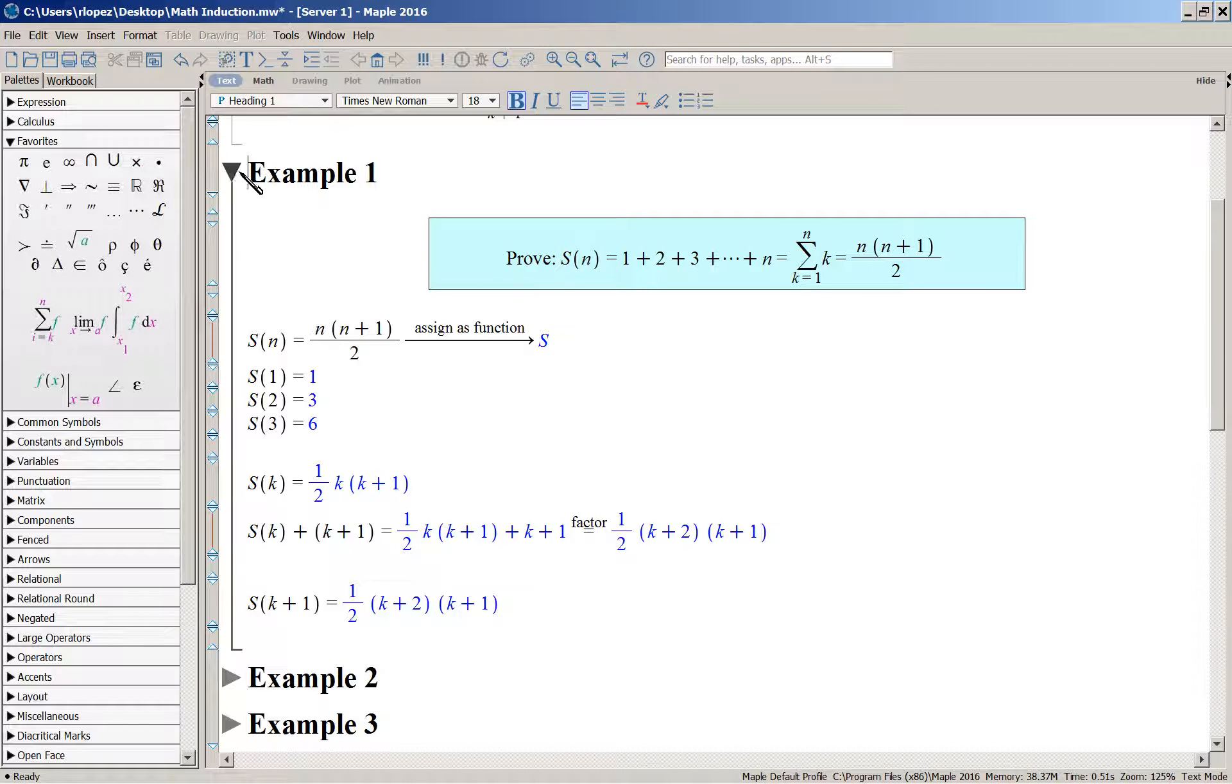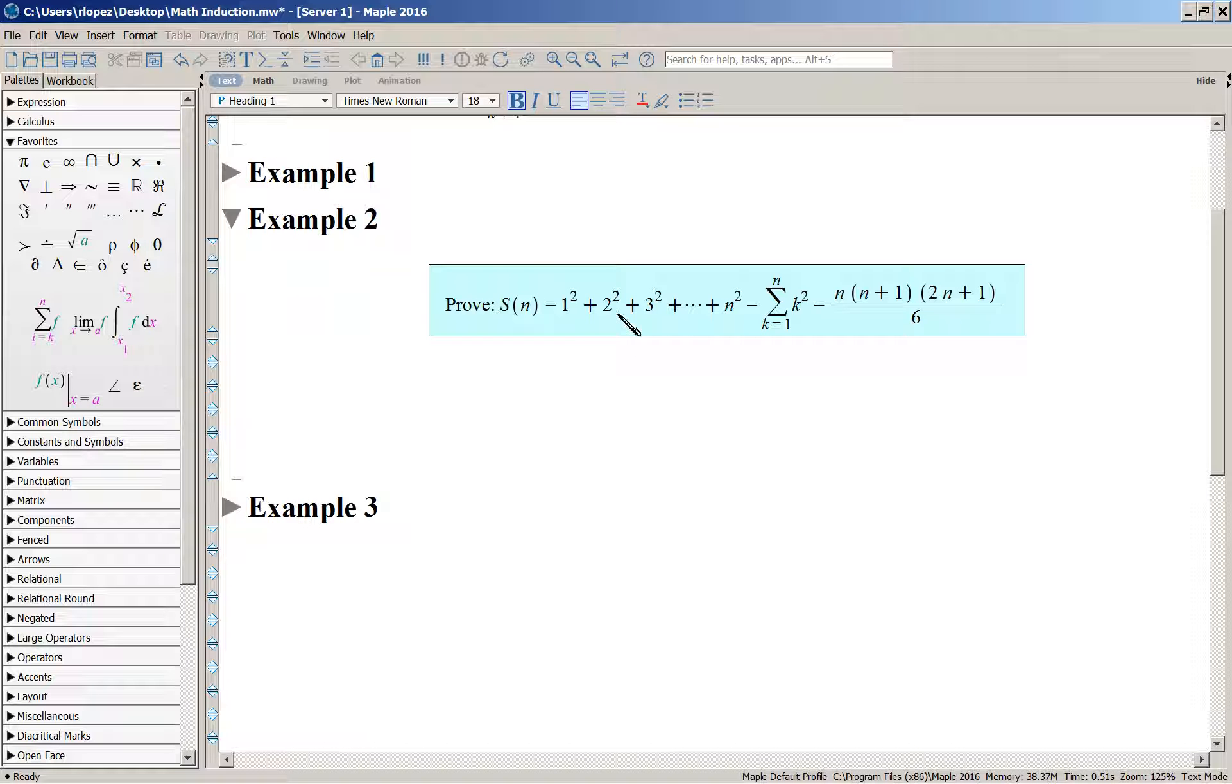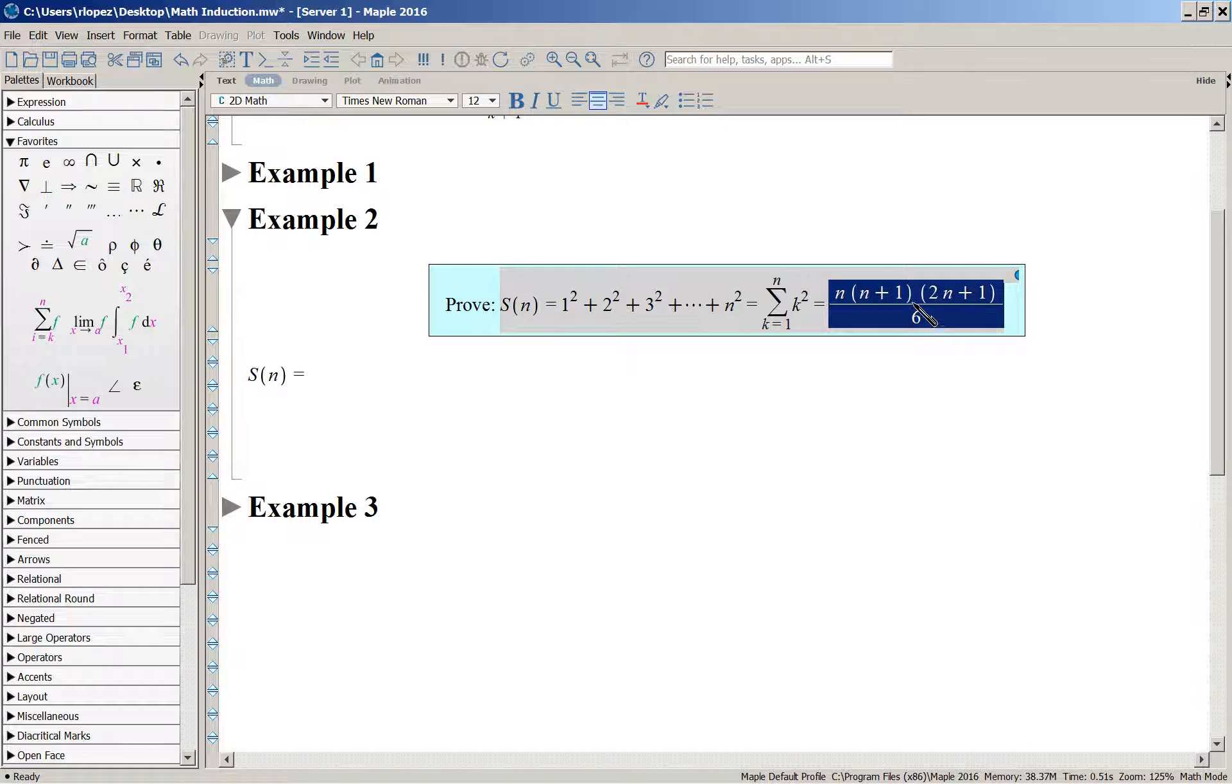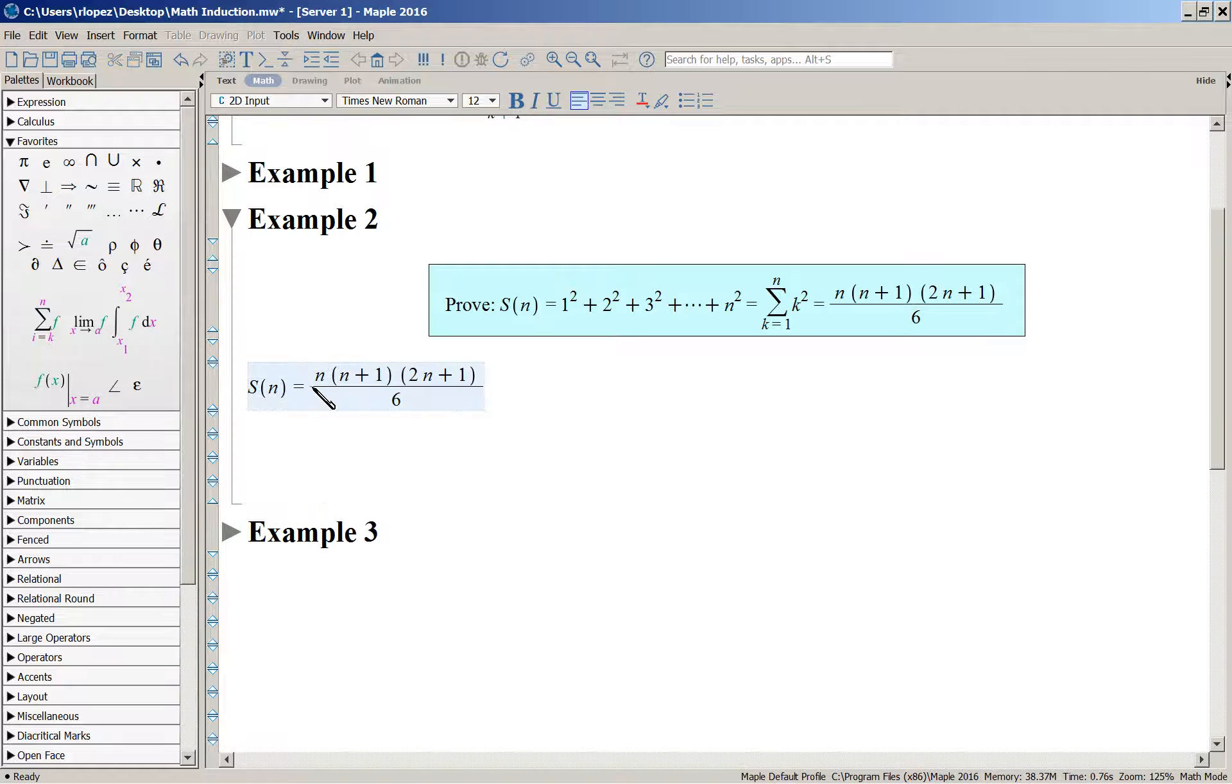And the next example is similar. It's now the sum of squares. So you're adding one squared, two squared, et cetera, up to N squared. And supposedly that sum comes out to be this. So let's do the same thing. Let's define S of N to be this expression. Drag this over and use this pop-up menu to define S as a function of N.